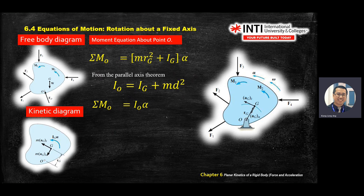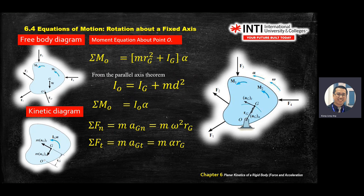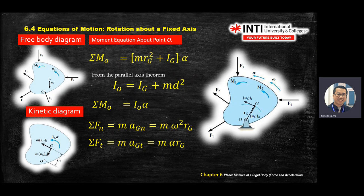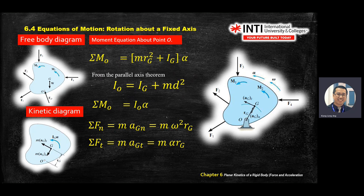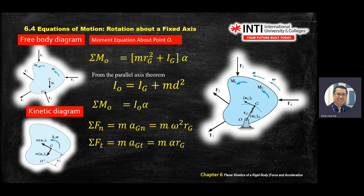So I_O equals I_G plus M times d squared. For Section 6.4 onwards, previously you used three equations. Now you add one more: if you have rotation about an axis, add a moment equation at that reference point equal to I at that point times alpha. Also, MA — change normal acceleration to omega squared r and tangential acceleration to alpha r, because you are rotating and must use angular acceleration and velocity.